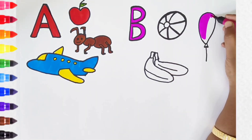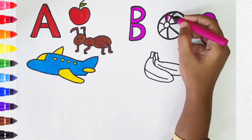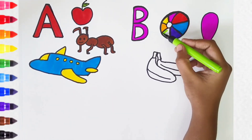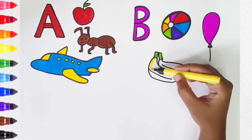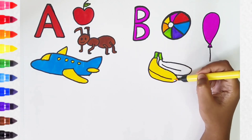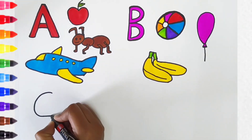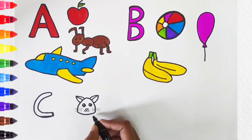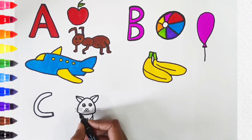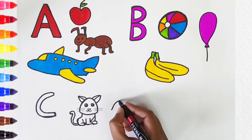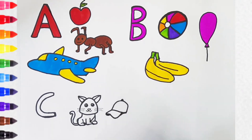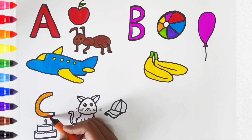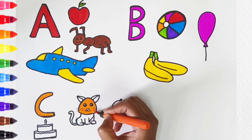B is for Balloon. B is for Ball. B is for Balloon. C is for Cap. C is for Kite. C is for Cat.